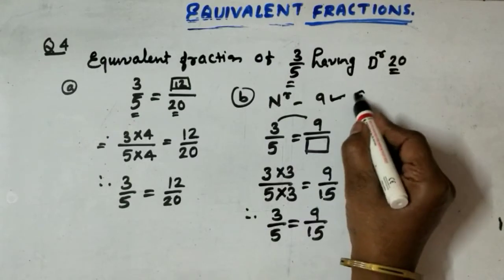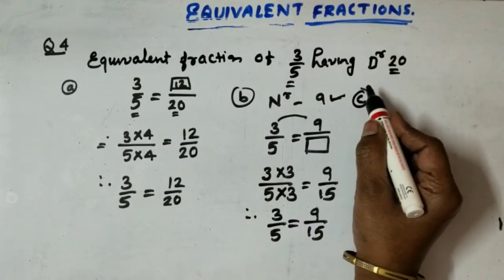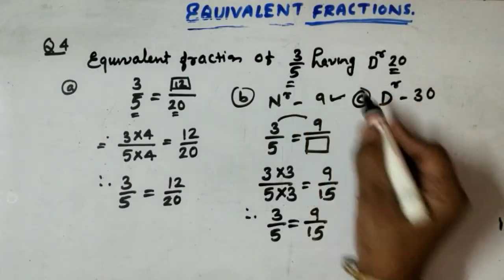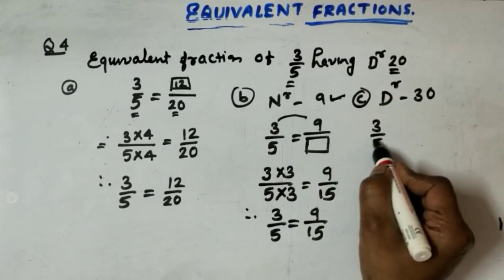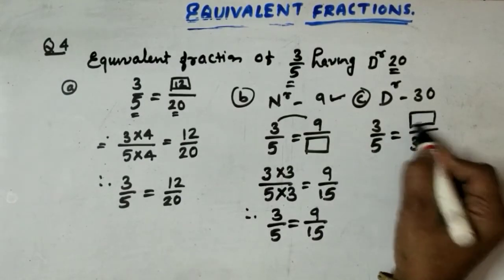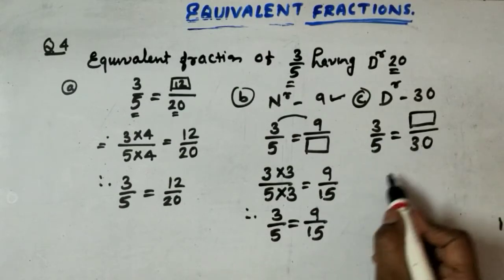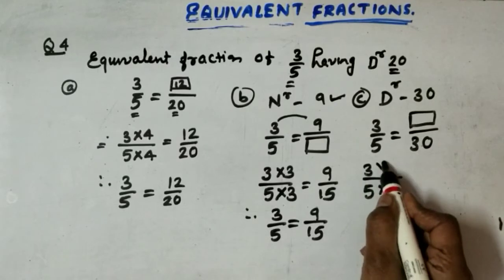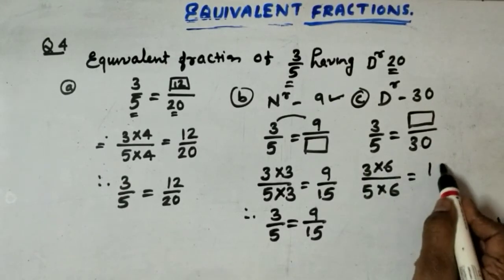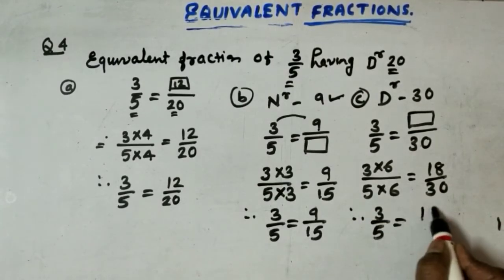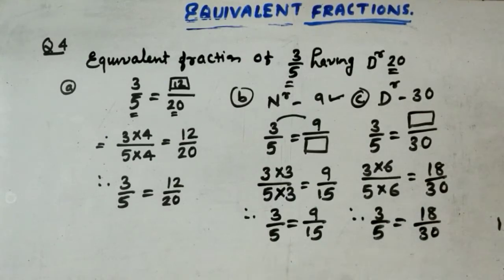Now the C question. Denominator 30. We are having fraction 3 by 5, so denominator is 30, numerator we have to find, give here box. Again see the relation between 5 and 30. 5, 6 are 30. So write here 3, 6 are 18 by 30. Therefore, 3 by 5 is equal to 18 by 30.